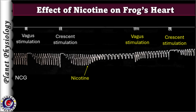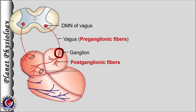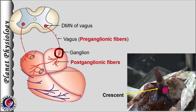Pause the video here and recall the basics of parasympathetic innervation. If needed, refer to my earlier video on nervous regulation of the frog's heart — the link is in the description below. The autonomic nervous system is a two-neuronal chain with preganglionic and postganglionic fibres. The vagus originates from the dorsal motor nucleus of the vagus in the medulla and has preganglionic parasympathetic fibres which terminate in autonomic ganglia. In the frog's heart, the ganglion is located within the crescent, and the postganglionic fibres arising from the ganglion innervate the cardiac muscle.